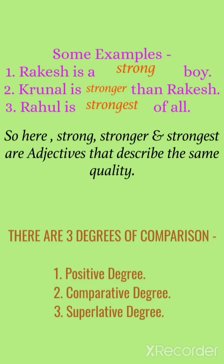Look at some examples. Rakesh is a strong boy. Kronal is stronger than Rakesh. Rahul is the strongest of all. So here, strong, stronger, and strongest are adjectives that describe the same quality. These are all adjectives describing the same quality in different degrees.